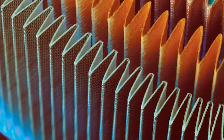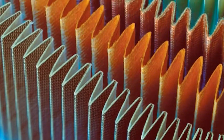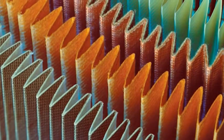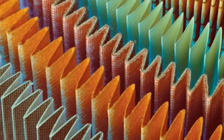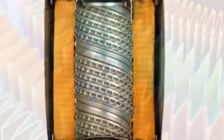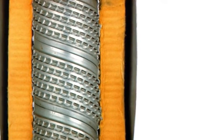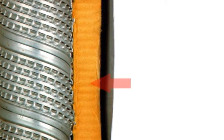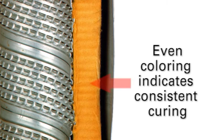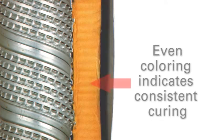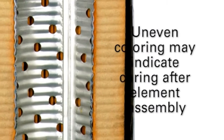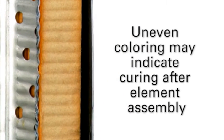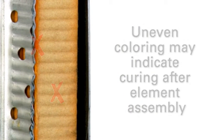When possible, Donaldson cures its filter media while the media is in a flat, pleated state to ensure consistency and evenness. This process adds strength to the media and protects against media ruptures. Whether cured in the flat, pleated state or assembled cartridge state, even curing of the media is crucial. Media poorly cured in a weakened state can rupture easily when saturated with oil.